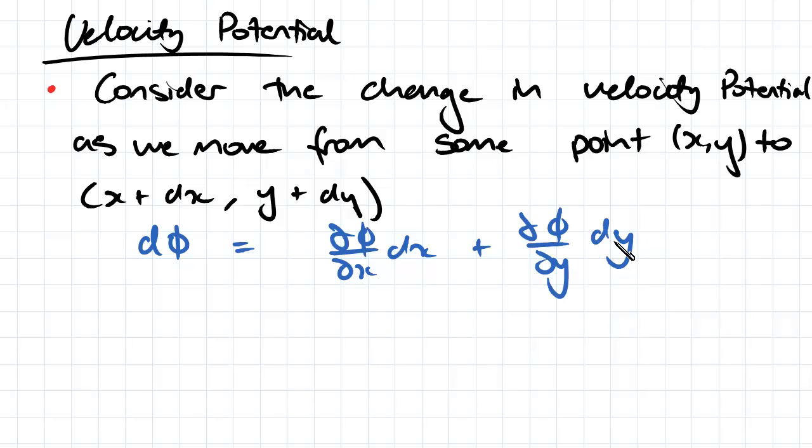So therefore we can simplify this down because we know this is equal to u and this is equal to v. So clearly the change of velocity potential function is equal to u dx plus v dy.